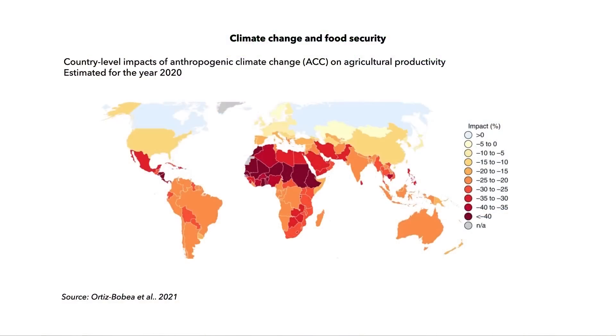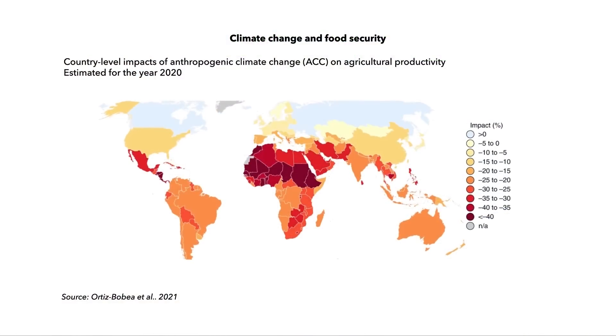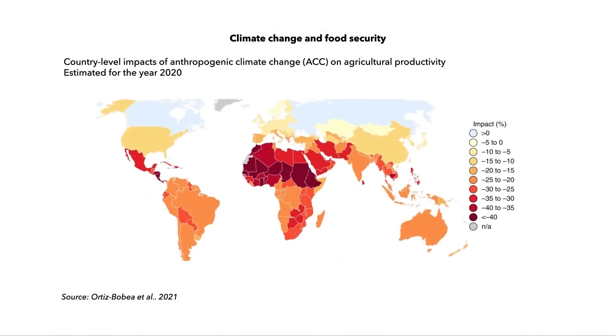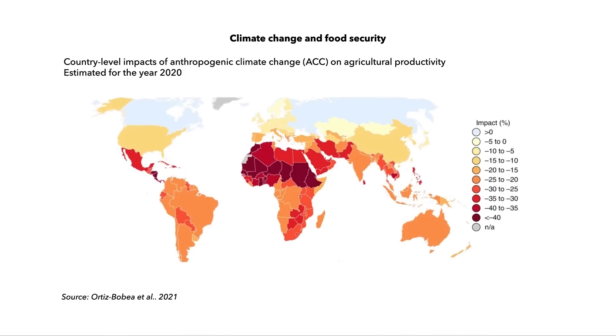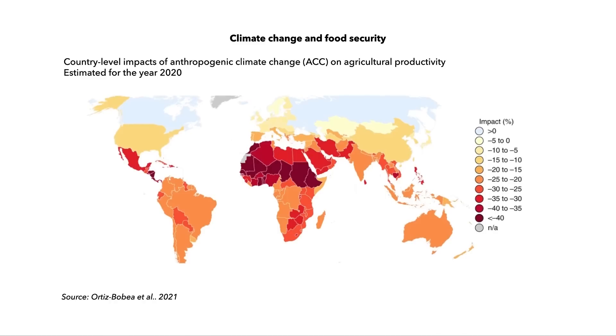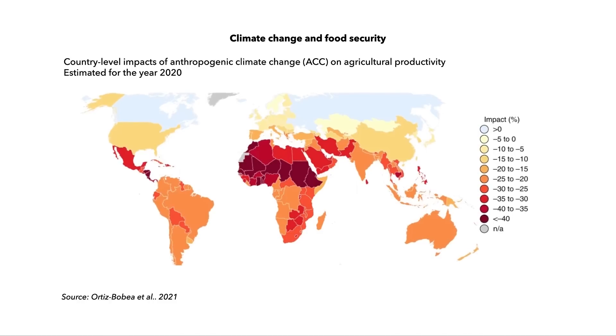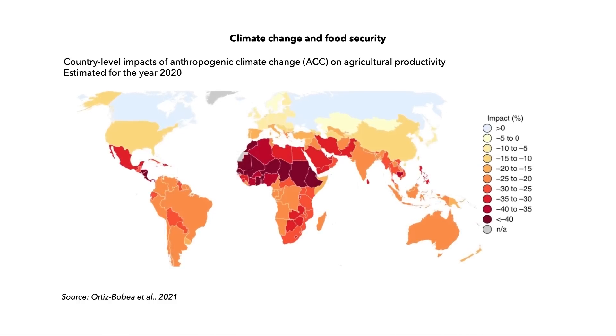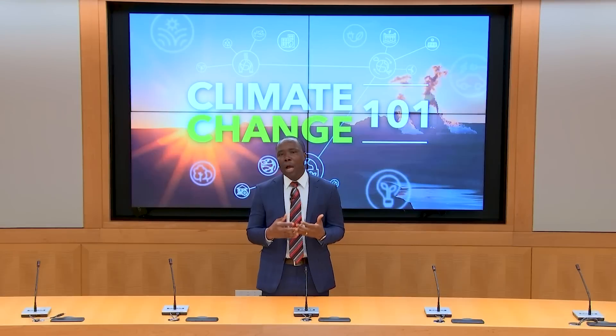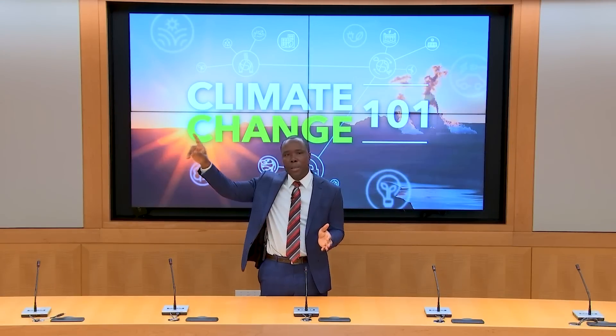Climate change also threatens global food security by reducing agricultural productivity. For example, sea level rise reduces agricultural land, while drought reduces agricultural productivity. In addition to the magnitude of the food security challenge posed by climate change, this graph also shows that tropical countries are most severely impacted. Low agricultural productivity reduces food supply and increases food prices, decreasing food security, especially in low-income countries.